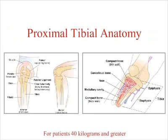Now let's take a look at the proximal tibial anatomy. With this slide, you can identify the structures of the tibia. Important points to note include the cortex at the epiphysis, our EZIO insertion site, versus the thicker compact bone on the diaphysis. Note also the vasculature crossing between the cancellous bone, through the thin cortex, and into the veins. This makes EZIO infusion possible.